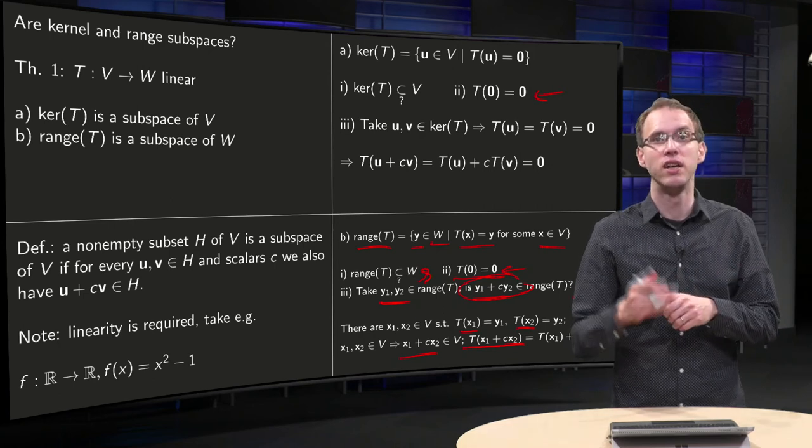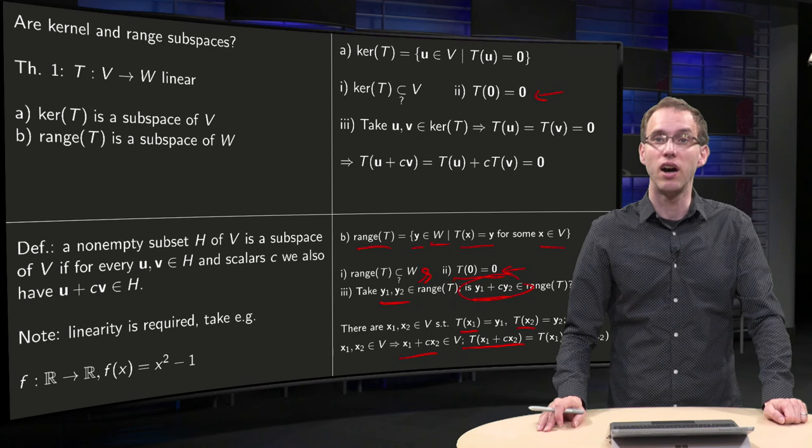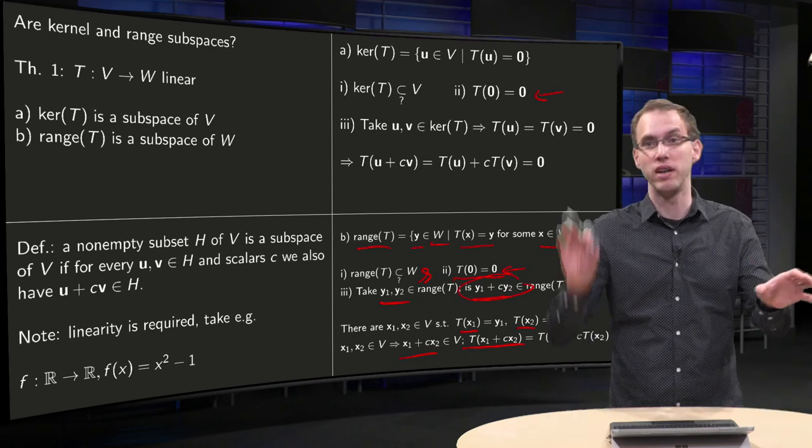If you have a linear transformation, then both your kernel and your range are subspaces of your domain and your codomain.